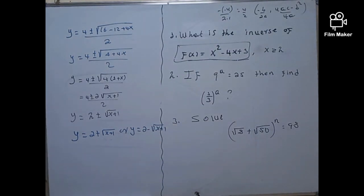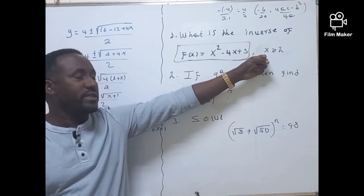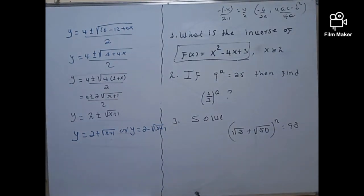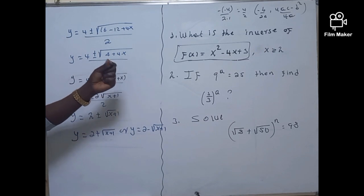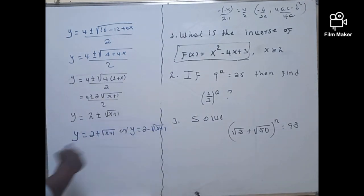Now, which will be the inverse of this function under the domain x greater than or equal to 2? The domain of the original function is x ≥ 2. Remember, the domain of f is the range of f⁻¹, and the domain of f⁻¹ is the range of f. So the inverse of the function is either f⁻¹(x) = 2 + √(x+1) or f⁻¹(x) = 2 - √(x+1). You have to identify which one applies.